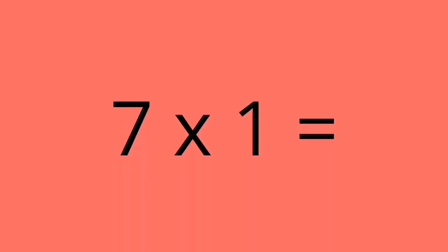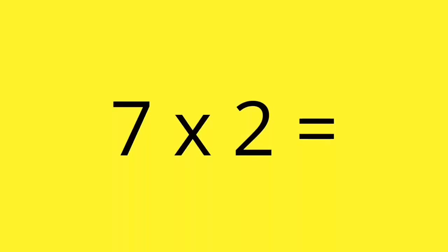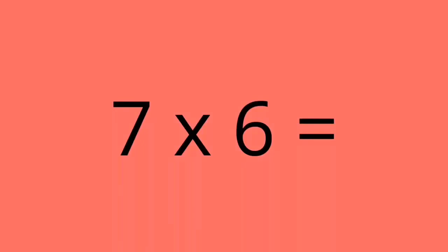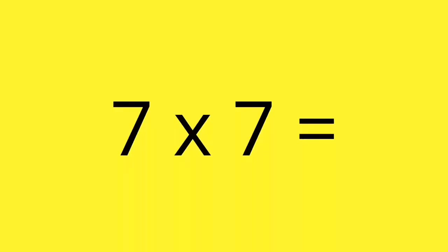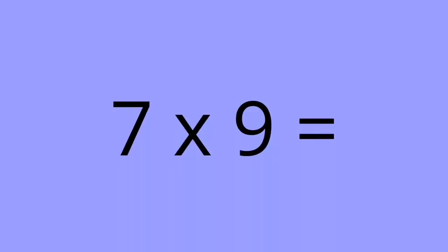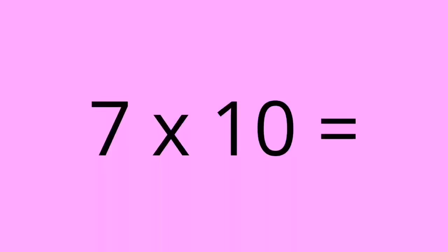7 times 1 equals 7. 7 times 2 equals 14. 7 times 3 equals 21. 7 times 4 equals 28. 7 times 5 equals 35. 7 times 6 equals 42. 7 times 7 equals 49. 7 times 8 equals 56. 7 times 9 equals 63. 7 times 10 equals 70.